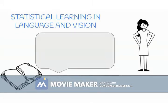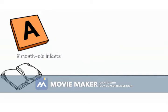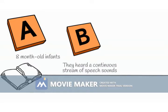Statistical learning in language and vision: the learner must select the correct structure in a given set of data without waiting forever and without the aid of any instruction. Adults and even infants are quite good at extracting the organizational structure by merely observing or listening to the input. They demonstrated this powerful learning mechanism in an early study investigating whether eight-month-old infants could discover words in a stream of speech, when the only available source of information was the probability that certain syllables occurred in specific temporal orders.